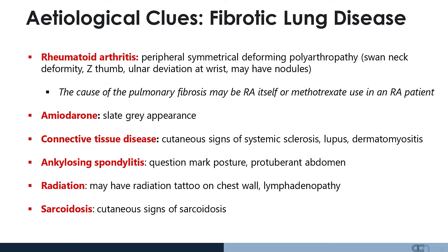Amiodarone can cause fibrosis and the patient would appear slate grey. Connective tissue diseases such as systemic sclerosis, lupus, or dermatomyositis have their own cutaneous manifestations. In ankylosing spondylitis, the patient may have kyphosis, a question mark posture, and a protuberant abdomen. Radiation causing fibrosis may present with a radiation tattoo on the chest wall and residual lymphadenopathy from a tumour. In sarcoidosis, you may see erythema nodosum.